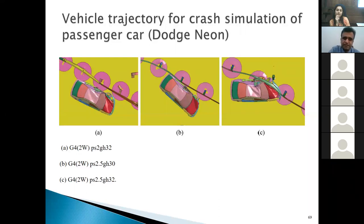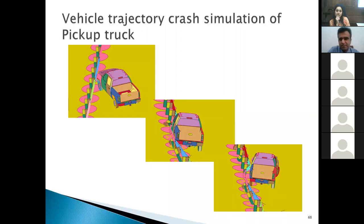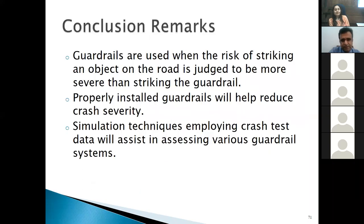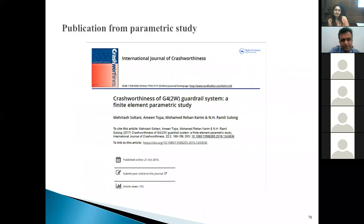Both the passenger car and pickup truck impact requirements must be met for the guardrail to pass the test level criteria. Another paper was then published after entering the lab and completing the modeling, sharing all results and criteria in detail.